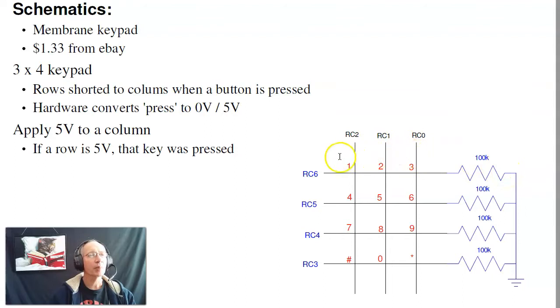The columns I'm going to make output. So I'm going to output zero volts, five volts. If I output five volts, zero volts, zero volts, I'm scanning column one. If I then hit button number one, RC6 will be five volts. The other ones will be zero. So that's how you detect the different buttons. I output a 100 to check the first column, 010 to check the second column, 001 to check the third column, and then check are any of the rows equal to one.